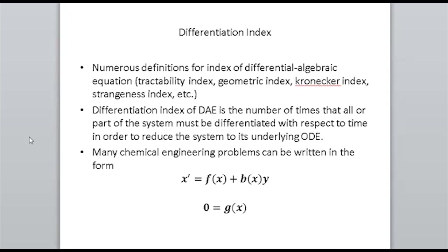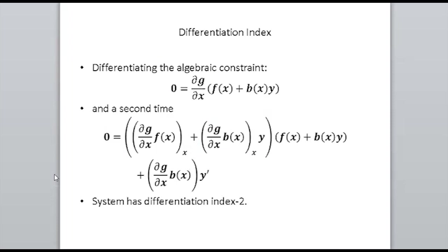In chemical engineering this is quite interesting because a lot of our separation systems — reactive flashes and reactive distillations — are indeed index two systems. I gave a simple form here, and the examples I'm going to show all fall into this form. It has a number of properties, not all of which we'll get into, some of which are exploited for index reduction. By exploiting these properties you actually run into some issues. Just as an example of the differentiations: if you differentiate that algebraic constraint once you get this first equation written there.